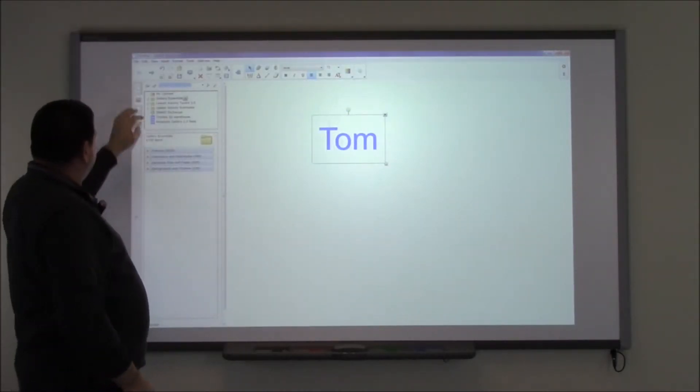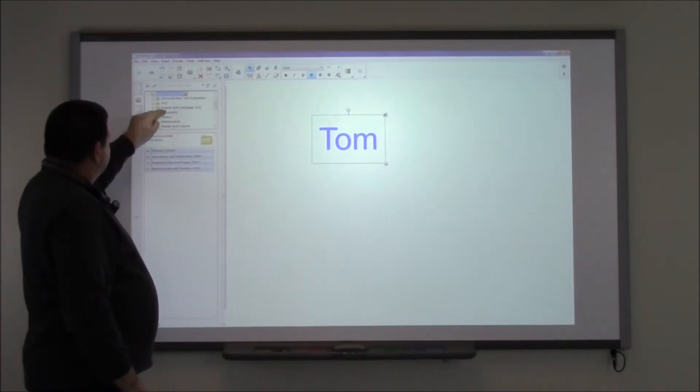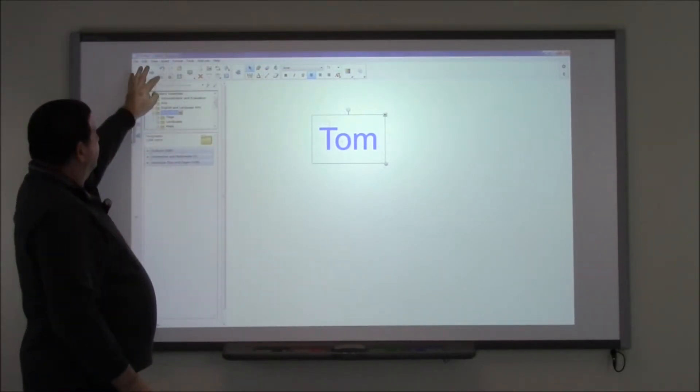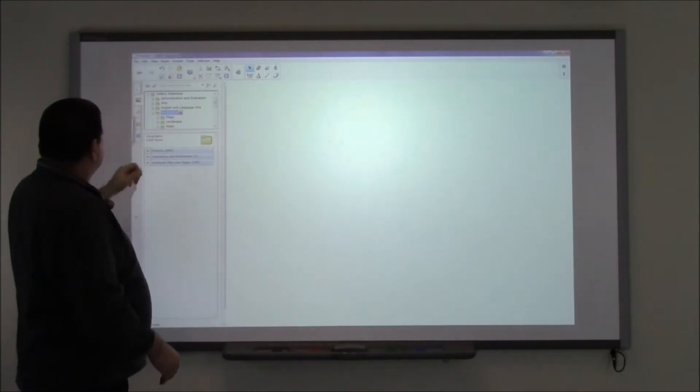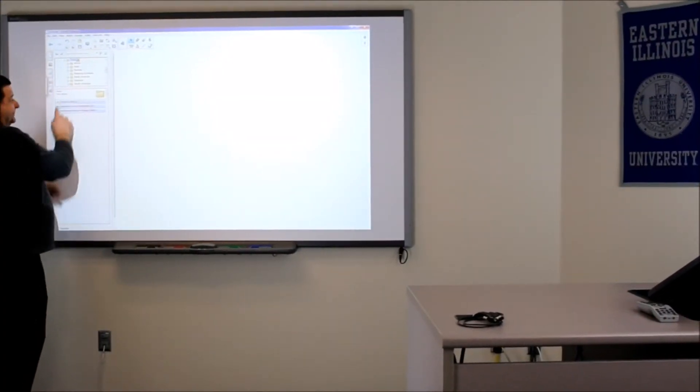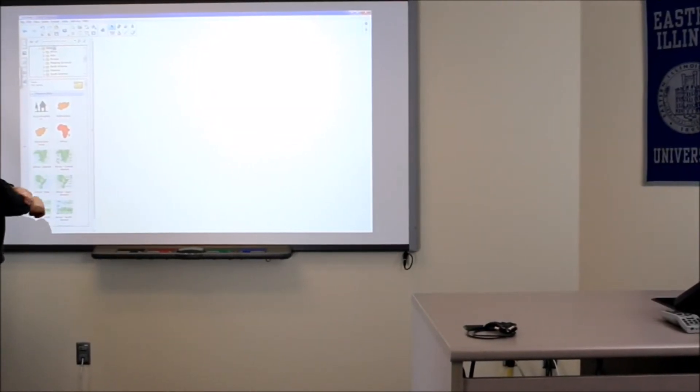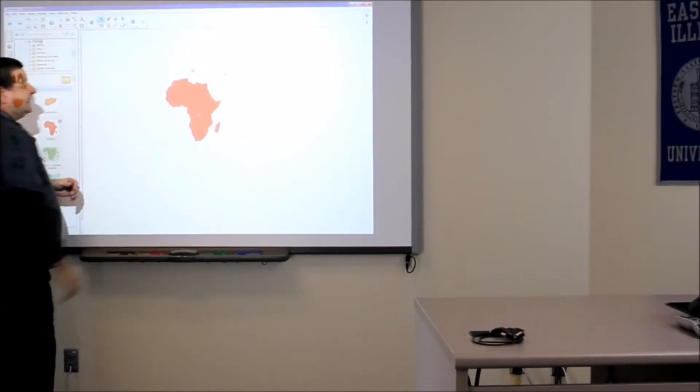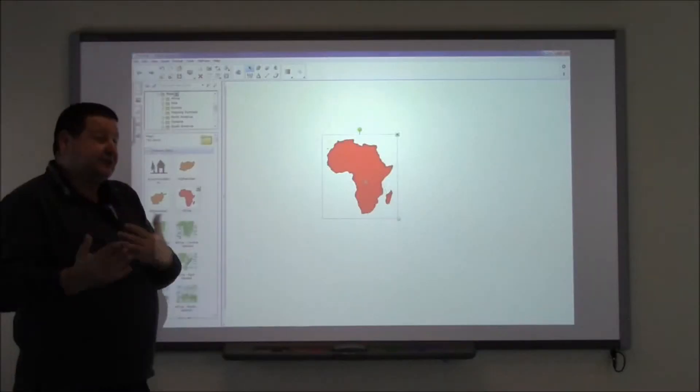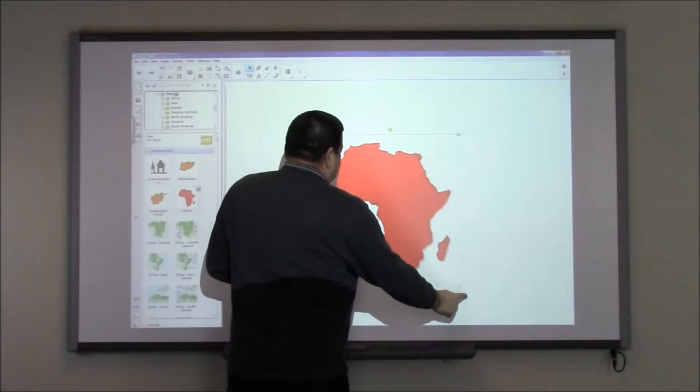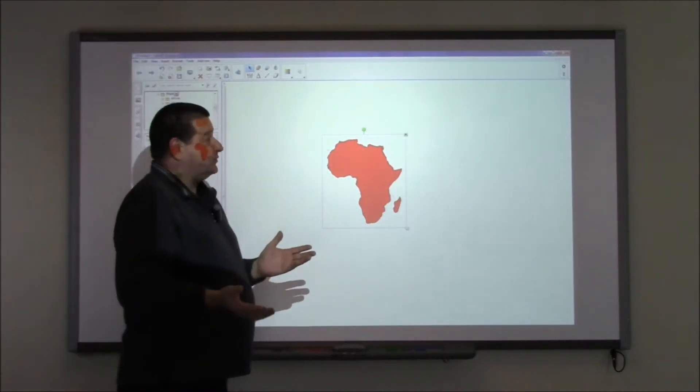We have a gallery on the side. Go into Gallery Essentials, then Geography. Let me make a new blank page here. Let's go to Maps, then Pictures—we have a variety of different options. For example, if we're doing a unit on Africa, we can quickly bring in clip art and resize it to make it smaller or larger, whatever you'd like.